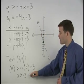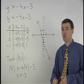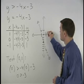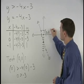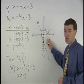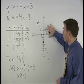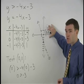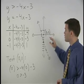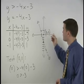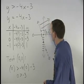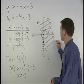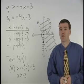Since 0 is greater than negative 3 is a true statement, that means the point 0, 0 is part of the solution set. And in fact, all points on this side of the boundary line will also be part of the solution set. So to represent this idea, we shade toward the point 0, 0. And we have our graph.